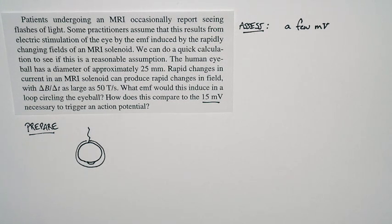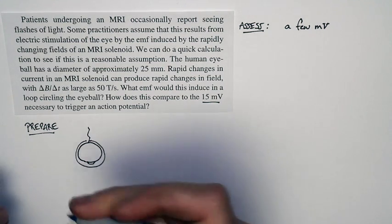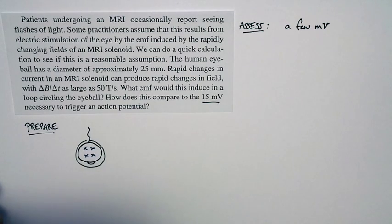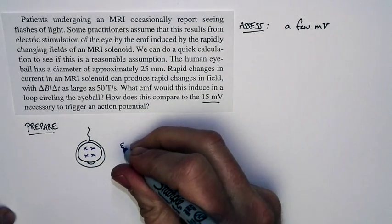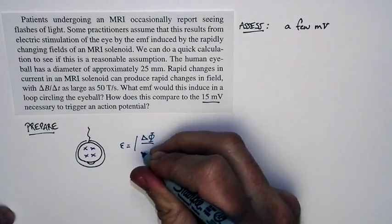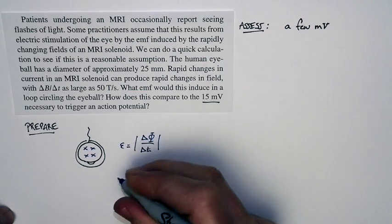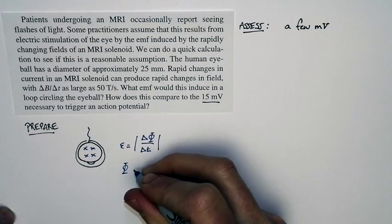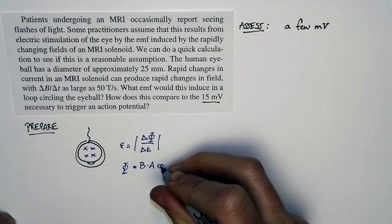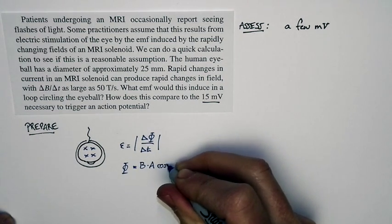So I'm expecting a result on the order of a few millivolts. Now, let's think about this. The magnetic field across the eyeball changes. So suppose I'm going to consider the magnetic field inside this loop, and it's changing. Well, the EMF that's induced is equal to the magnitude of delta phi over delta T. Now phi is the flux.